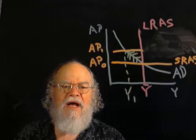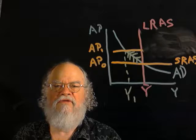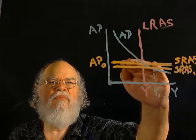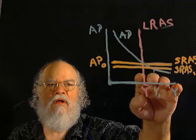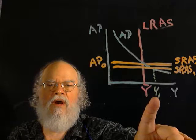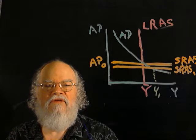What happens with a positive supply shock? Well, the opposite mostly. Short-run aggregate supply shifts to lower prices overall, higher output at Y1, and here's the timeline.